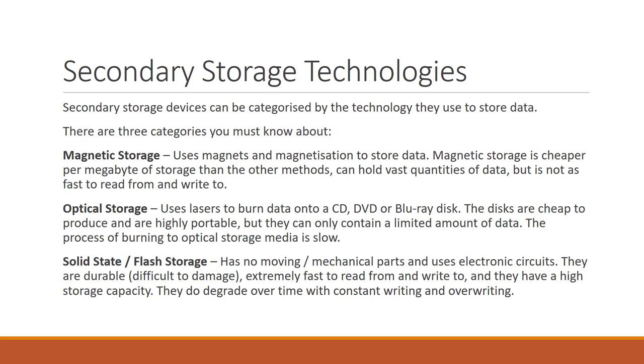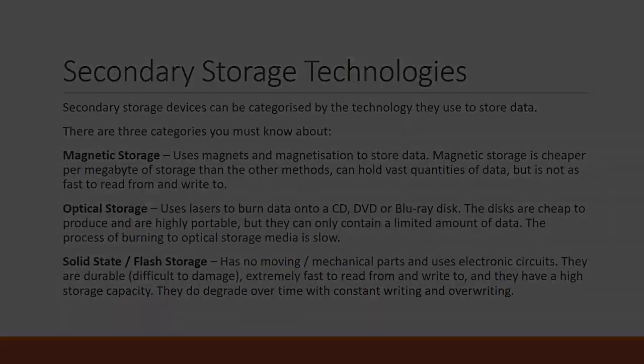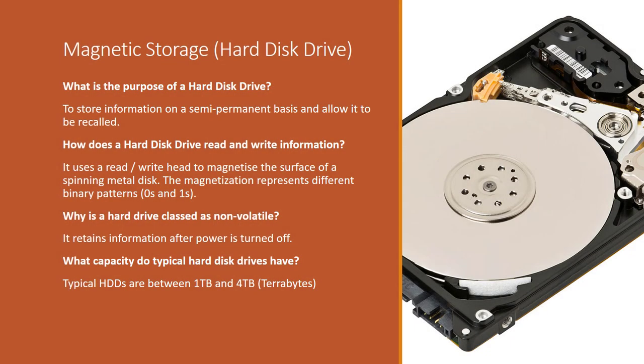Let's look at a range of devices that fall under each category. First up, we have the hard disk drive, which is a form of magnetic storage. The purpose of the hard disk drive is to store programs and data on your computer on a long-term basis — this is where you install your programs and save your files. It works by using a read-write head which magnetizes the surface of a spinning metal disc, creating different binary patterns which represent the data being stored. Hard disk drives are non-volatile and have a typical capacity of between 1 and 4 terabytes.